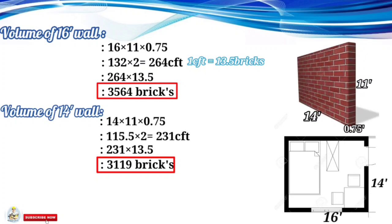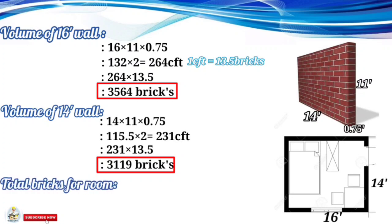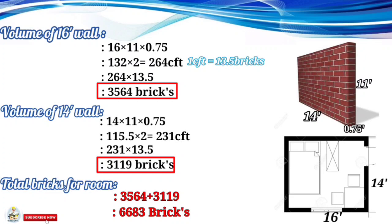We already found the bricks for the 16-foot walls, so now we add both values together. The total bricks equals 3,564 plus 3,119, which gives 6,683 bricks required for that particular room. That's it for today's lecture. If you are new to my channel, please subscribe and press the bell icon for more updates. Thank you so much.